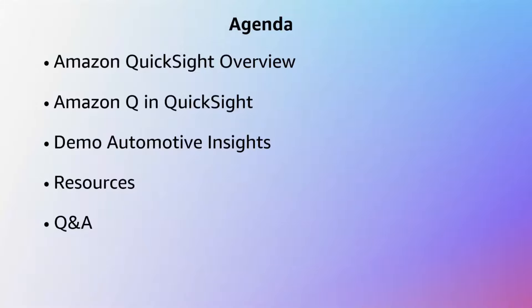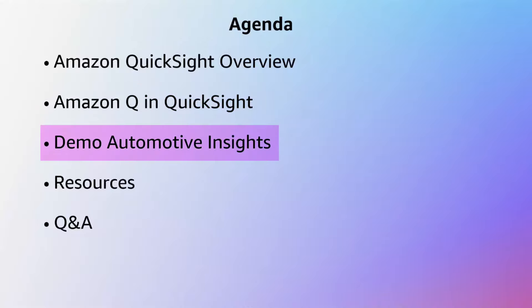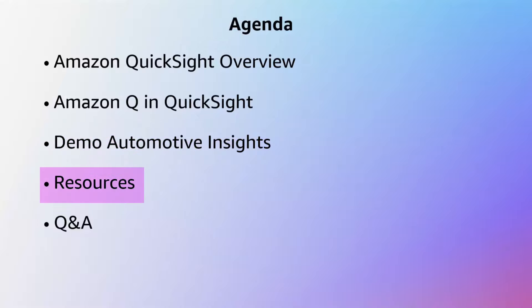We will first discuss QuickSight and then the generative BI capabilities through Amazon Q in QuickSight. Followed by that, we will have an Automotive Insights demo to go deeper into all these capabilities. And finally, I'll share some resources that can be helpful to get you started.